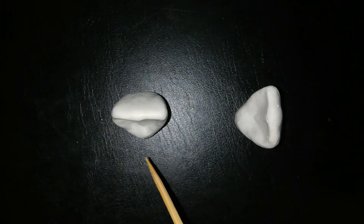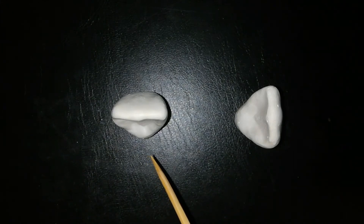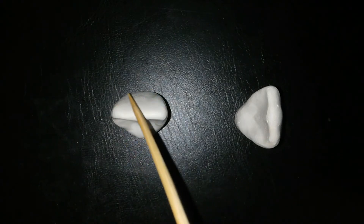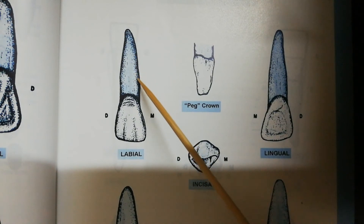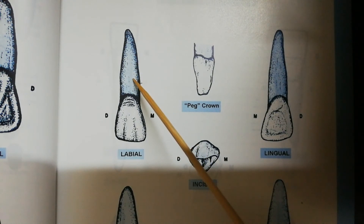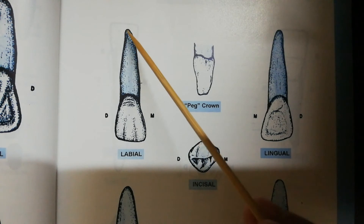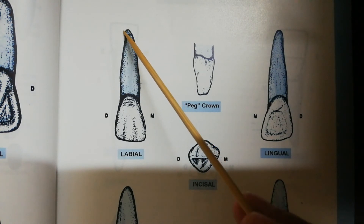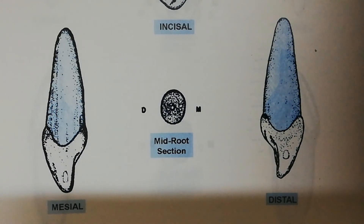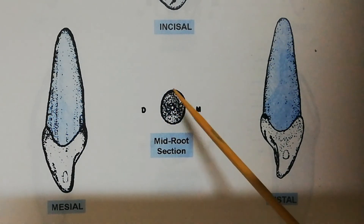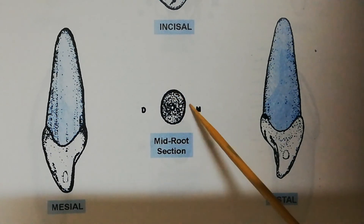The incisal aspect of the maxillary lateral incisor is similar to the maxillary central incisor, except the cingulum is more prominent and the labial aspect is more convex. The root is single and it is longer than the crown but still shorter than the root of the maxillary central incisor. The apex is less rounded and deflected towards the distal side. The root is wider labiolingually than mesiodistally, and the cervical and mid-root cross sections both present an ovoid shape wider labiolingually.